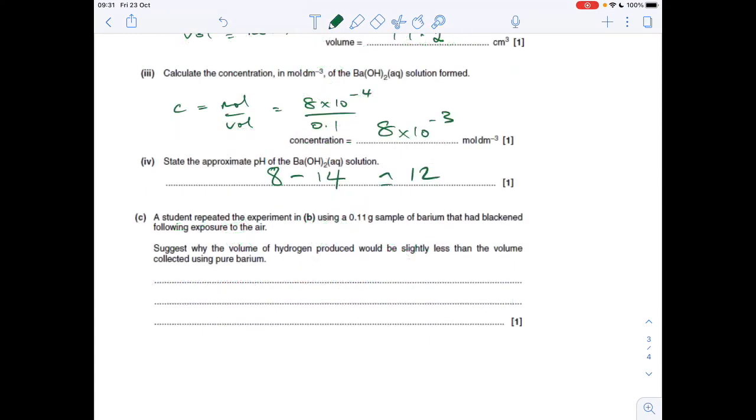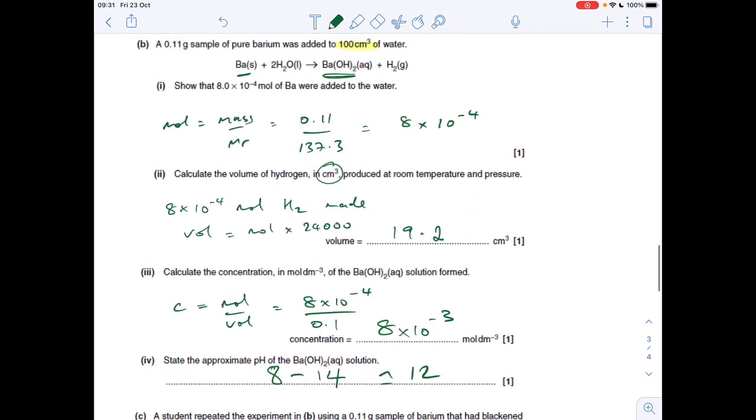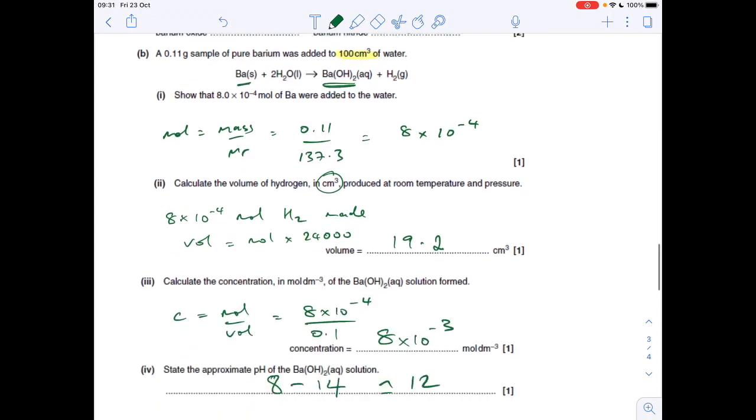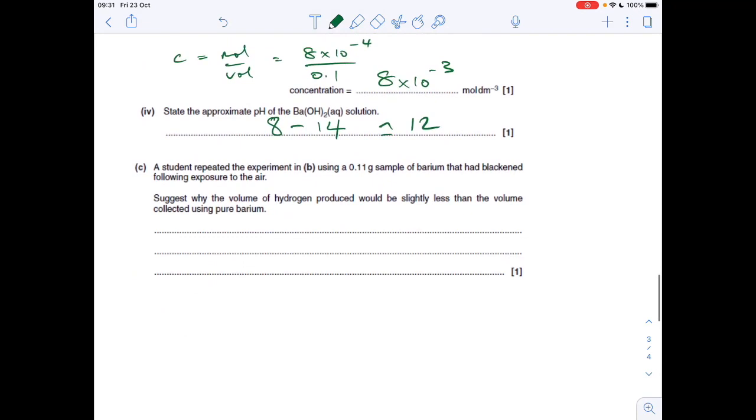Final part of the question. Student repeats the experiment using 0.11 grams of barium that had blackened following exposure to air. Suggests why the volume of hydrogen produces slightly less. So because it's blackened, there's information there you can see. It blackens when exposed to air due to the formation of both barium oxide and barium nitride. So basically, we've got fewer moles of barium in that 0.11 gram sample. And so we're going to get fewer moles of hydrogen.